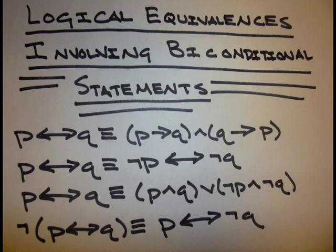Logical equivalences involving biconditional statements: P if and only if Q is equivalent to (P then Q) and (Q then P). P if and only if Q is also equivalent to (not P if and only if not Q). P if and only if Q is equivalent to (P and Q) or (not P and not Q). And the negation of (P if and only if Q) is equivalent to P if and only if not Q.